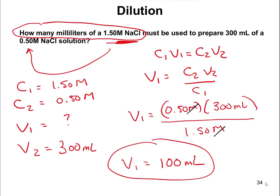One thing to always keep in mind is, after you do problems like this, make sure the answer makes sense. If you flipped C1 and C2, for instance, you would get 900 instead of 100. You can't use 900 milliliters of something to make a 300 milliliter solution — it just doesn't work that way. So think about the problem and make sure your number makes sense. It's a good way to double-check your work.